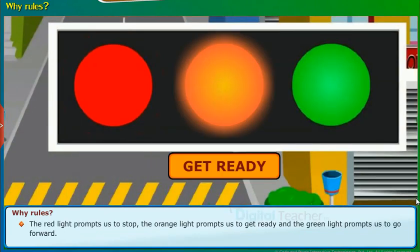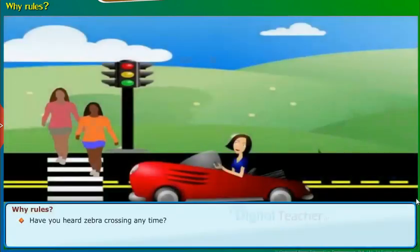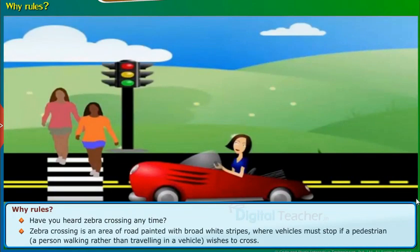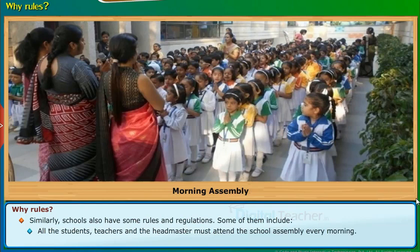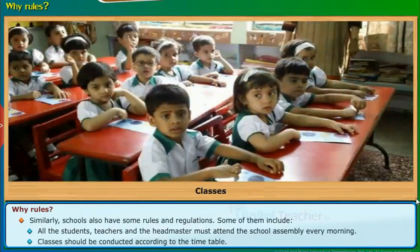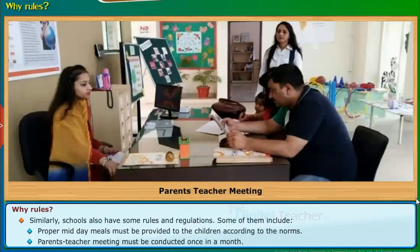The red light prompts us to stop, the orange light prompts us to get ready, and the green light prompts us to go forward. Zebra crossing is an area of road painted with broad white stripes where vehicles must stop if a pedestrian — that is, a person walking rather than traveling in a vehicle — wishes to cross. Similarly, schools also have some rules and regulations. Some of them include: all the students, teachers, and the headmaster must attend the school assembly every morning; classes should be conducted according to the timetable; proper midday meals must be provided to the children according to the norms; and parents' teacher meetings must be conducted once in a month.